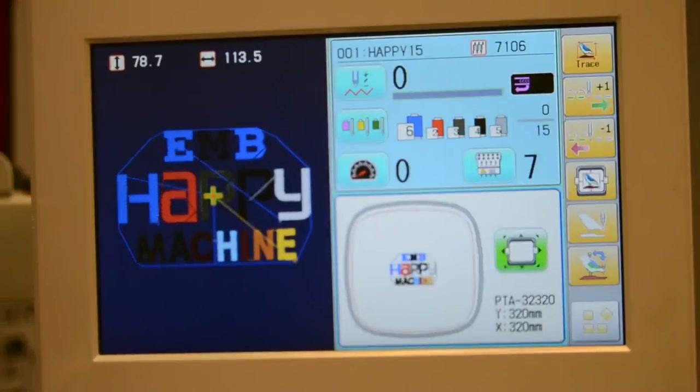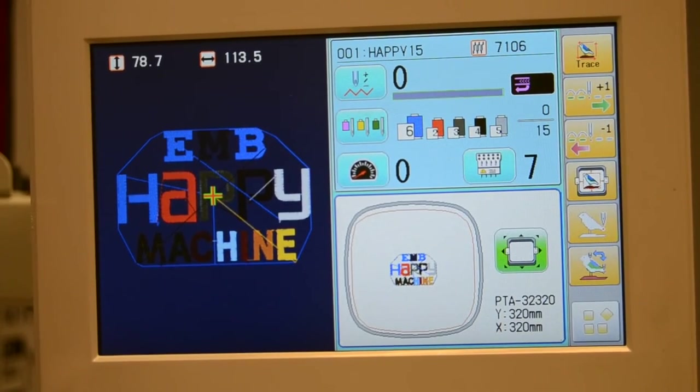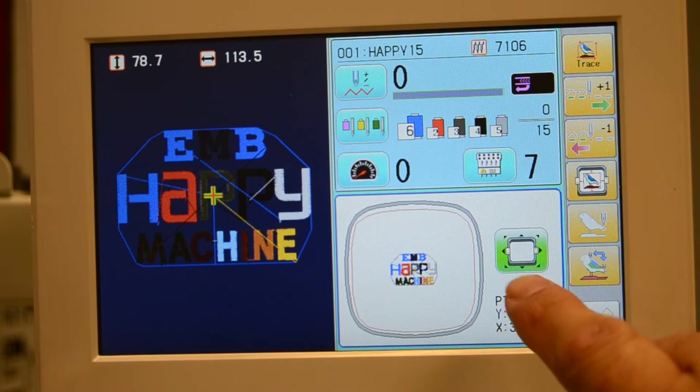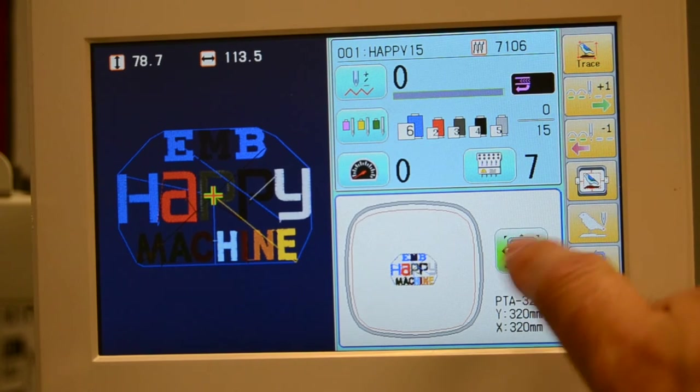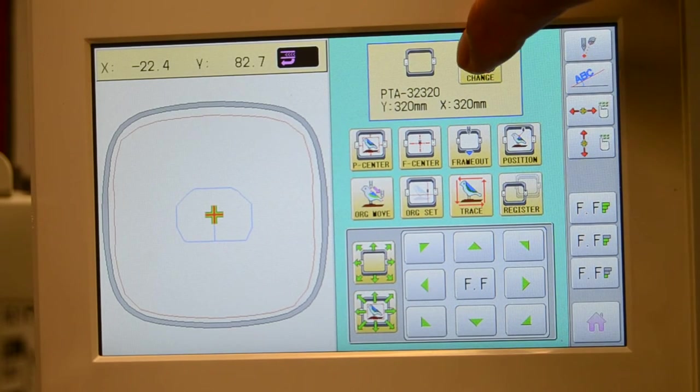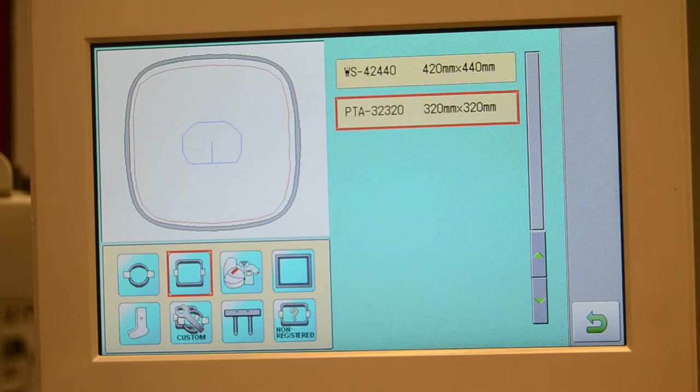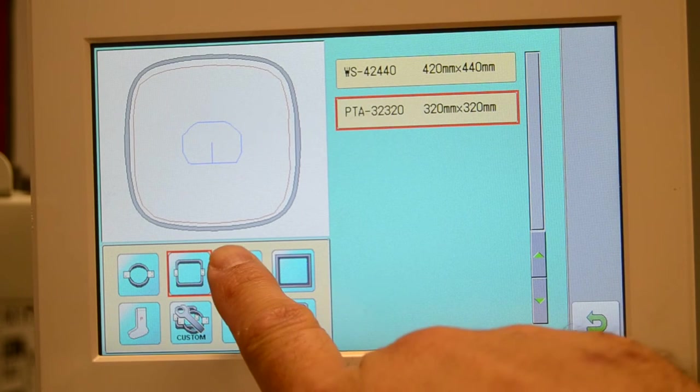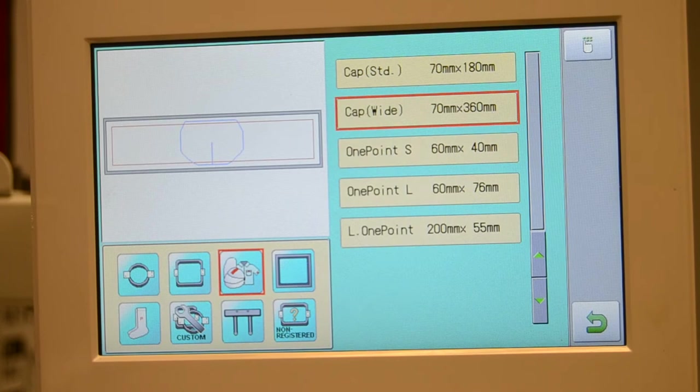So one of the things we'll do is here, as you can see from the main sewing screen, we're going to go to the button to reposition the design and also choose your hoop. So we're going to go to change here to change hoops. This shows you the different categories of hoops that are available. We're going to choose the cap hoop category.